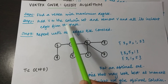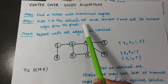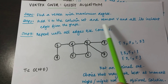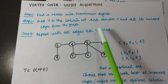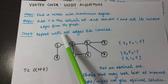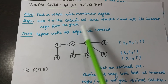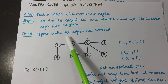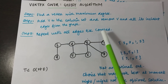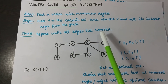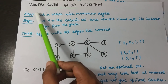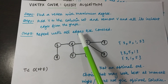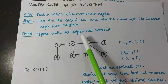Step two: add this vertex to the solution set and remove all the edges associated with that vertex V. Step three: repeat steps one and two until all edges are covered. Note that even though we call it vertex cover, our focus here is actually on covering all the edges of the graph.